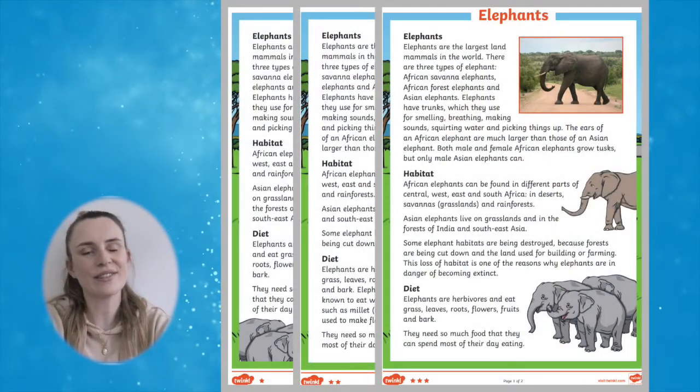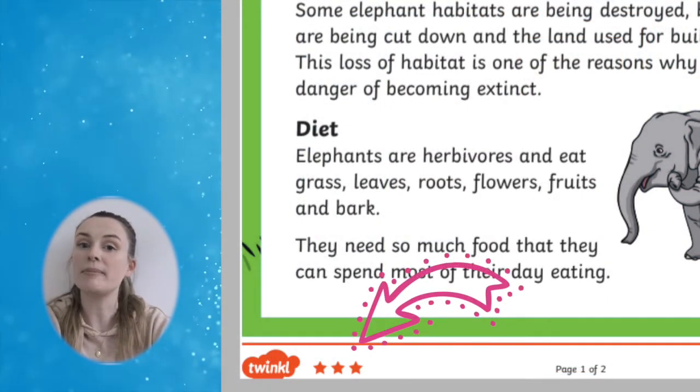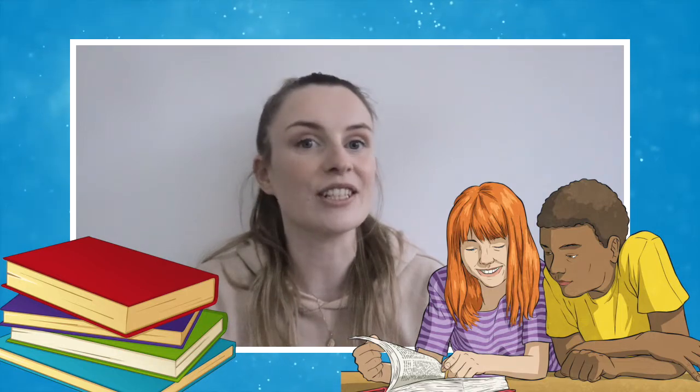These fact files are differentiated, with three stars being the most challenging. Plan a guided reading session using the fact files as the text. You can create questions based on the differentiated texts. This guided reading session will build on nicely to a literacy lesson where children can create their own fact files.